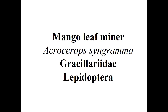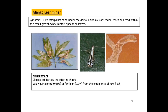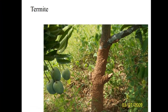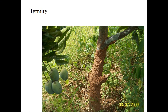Coming to mango leaf miner — Acrocercops syngramma, family Gracillariidae, order Lepidoptera. Tiny caterpillars mine under the dorsal epidermis of tender leaves and feed within; as a result, grayish-white blisters appear on leaves. Management: collect and destroy affected shoots; use insecticides like quinalphos or fenthion from the emergence of new leaf flush. Chlorpyrifos is also used for effective management. Here I end my presentation. Thank you.